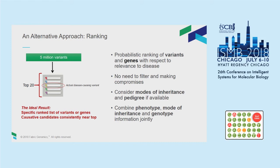In this prioritization process, we can consider model of inheritance — for example dominant or recessive. And if there is pedigree information, for example when parents have been sequenced, we can also use that information at this step. What I'm going to talk about today is that we can also use phenotype information to inform this process in a joint way.